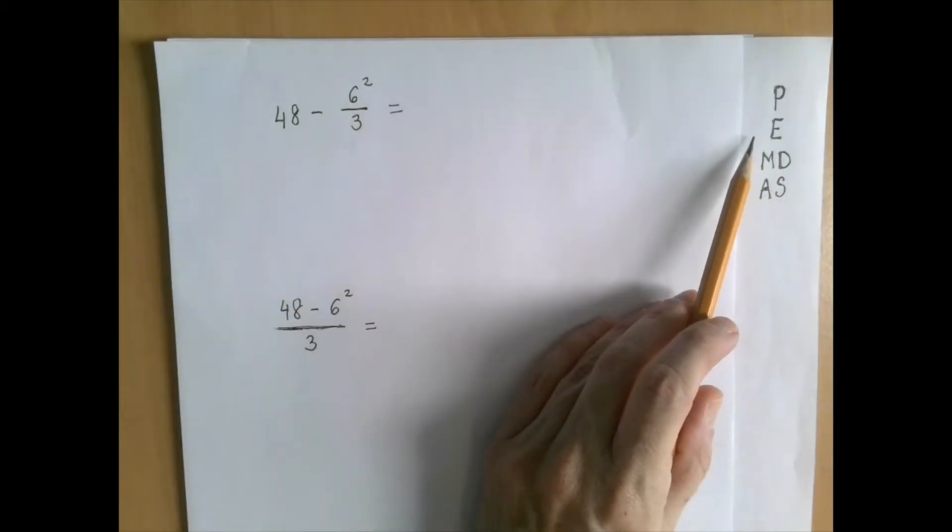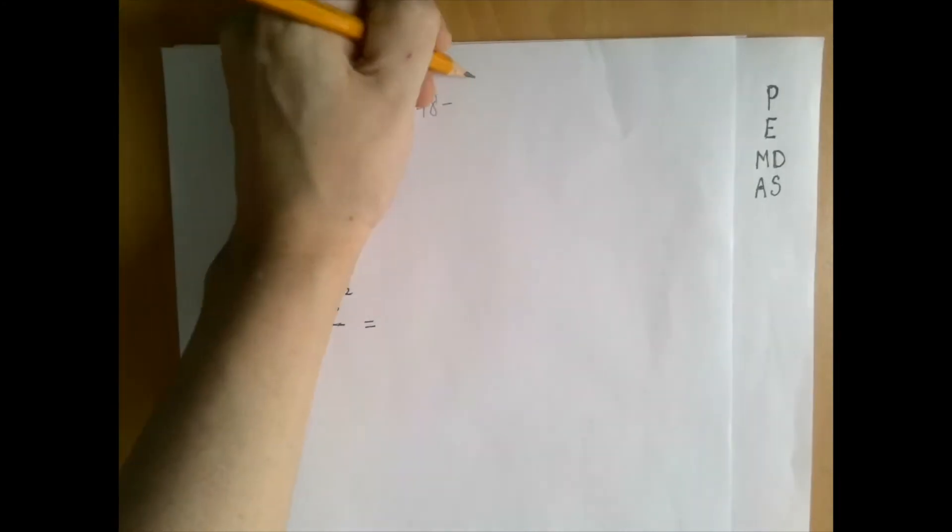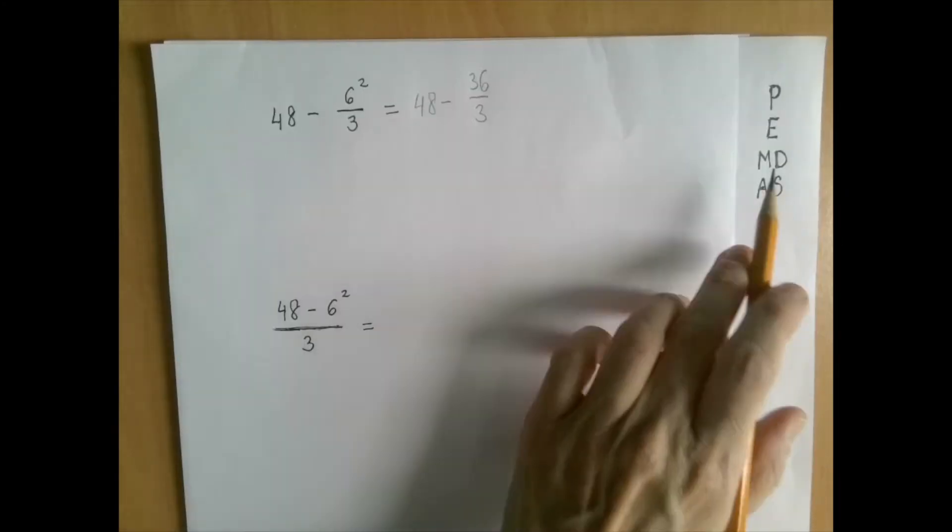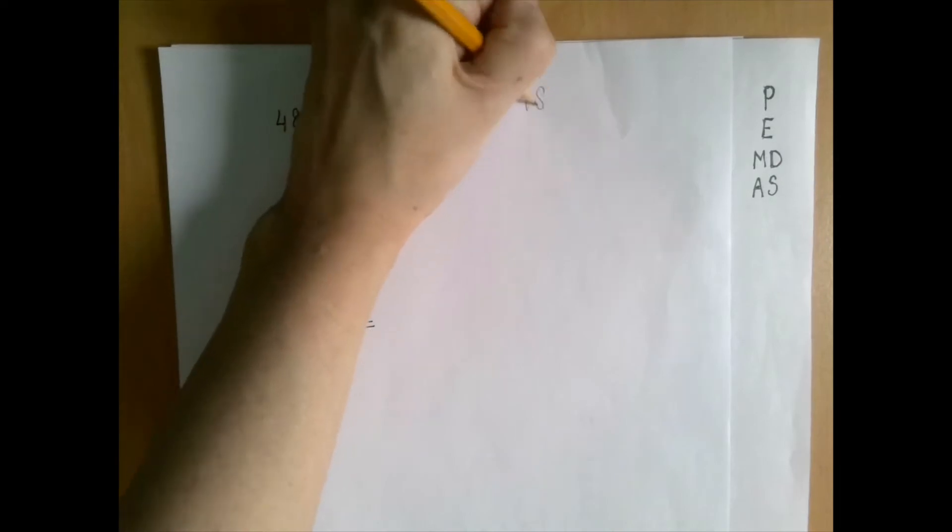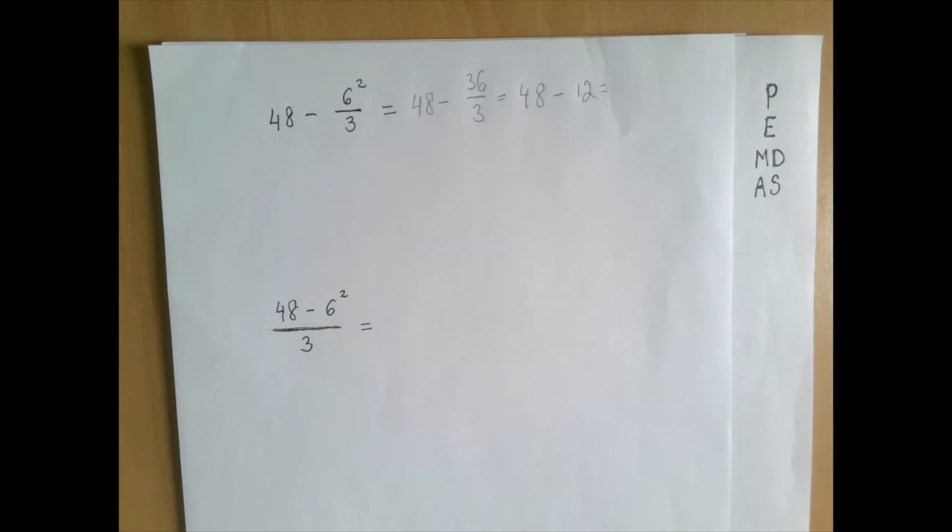Exponentiation is the strongest, so we start there. From 48, what we're going to subtract is 36 over 3. Now we do the division: 48 minus 36 divided by 3 is 12, so we have 48 minus 12, which is 36.